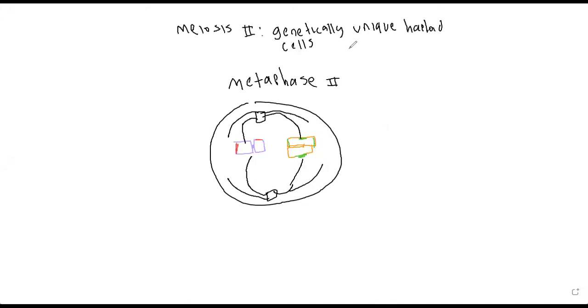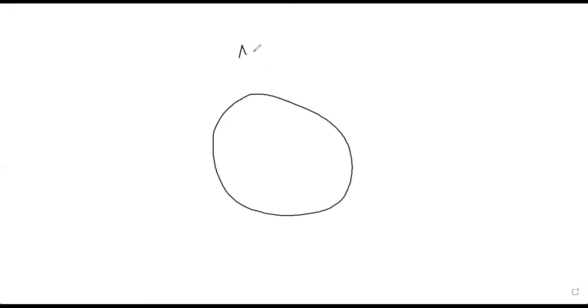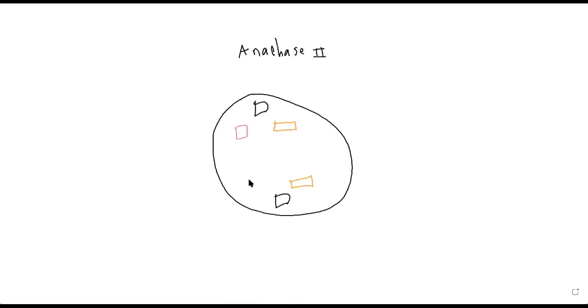Now we have anaphase 2. In anaphase 2 we finally have the separation of the sister chromatids. The recombined pairs of sister chromatids are now pulled to the opposite sides of the cell, all done by the meiotic spindle.